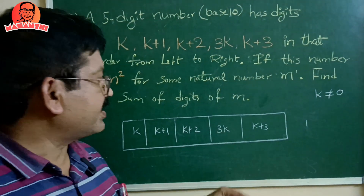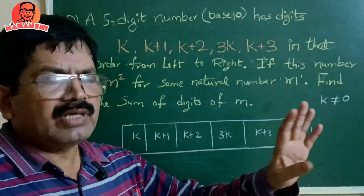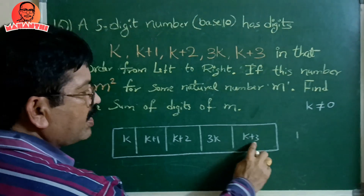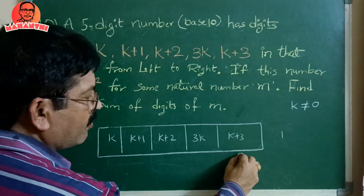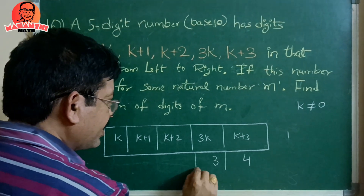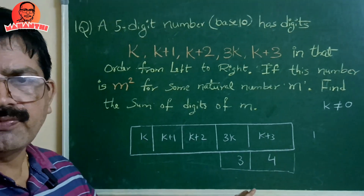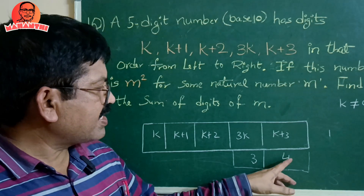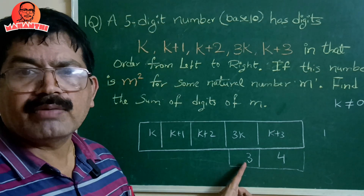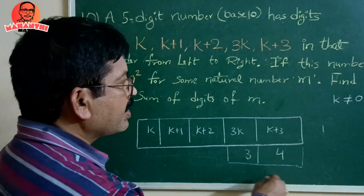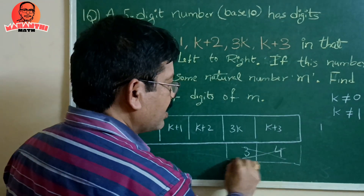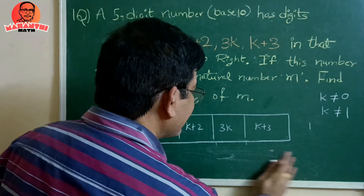Taking k=1: the units digit becomes k+3 = 4, and the tens digit becomes 3k = 3. For a perfect square ending in 6 the tens digit must be odd, and ending in other digits has other constraints. Here the units digit is 4 and tens digit is 3 — an odd number — but this violates the perfect square property, so k=1 is not valid.